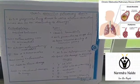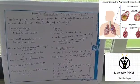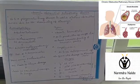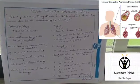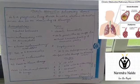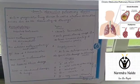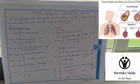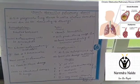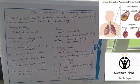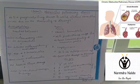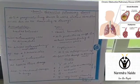Chronic obstructive pulmonary disease is a progressive lung disease in which the narrowing of airways occurs, leading to airflow obstruction. The patient cannot inhale or exhale air freely.